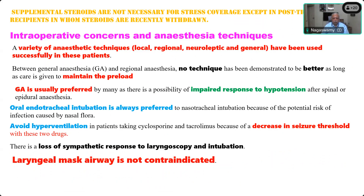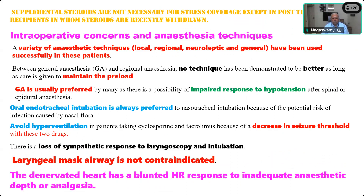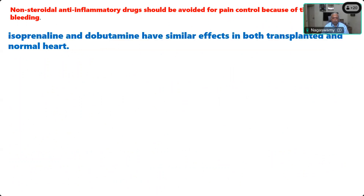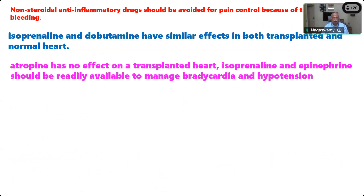The loss of sympathetic response to laryngoscopy and intubation should be noted. LMA is not contraindicated — if confident, it can be used. The denervated heart has a blunted heart rate response to inadequate anesthesia, making it challenging to determine if anesthesia and analgesia are adequate. NSAIDs should be avoided due to the risk of bleeding. Isoprenaline and dobutamine have similar effects on the transplanted heart. For bradycardia, atropine will not work — isoprenaline should be readily available to manage bradycardia and hypotension.